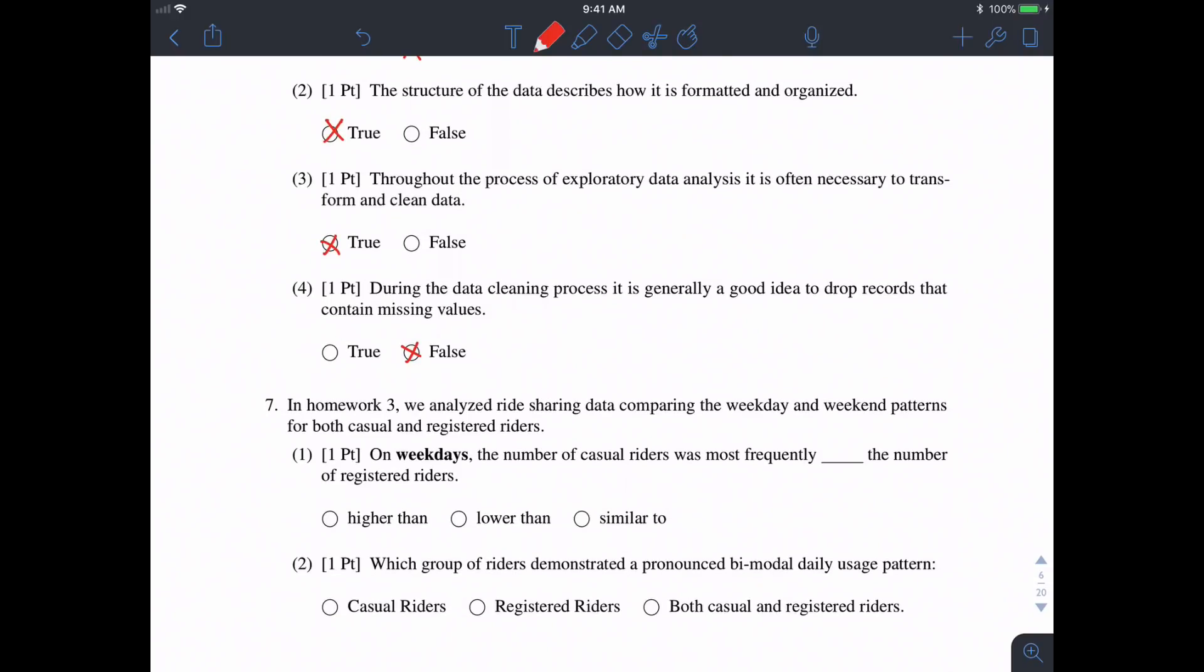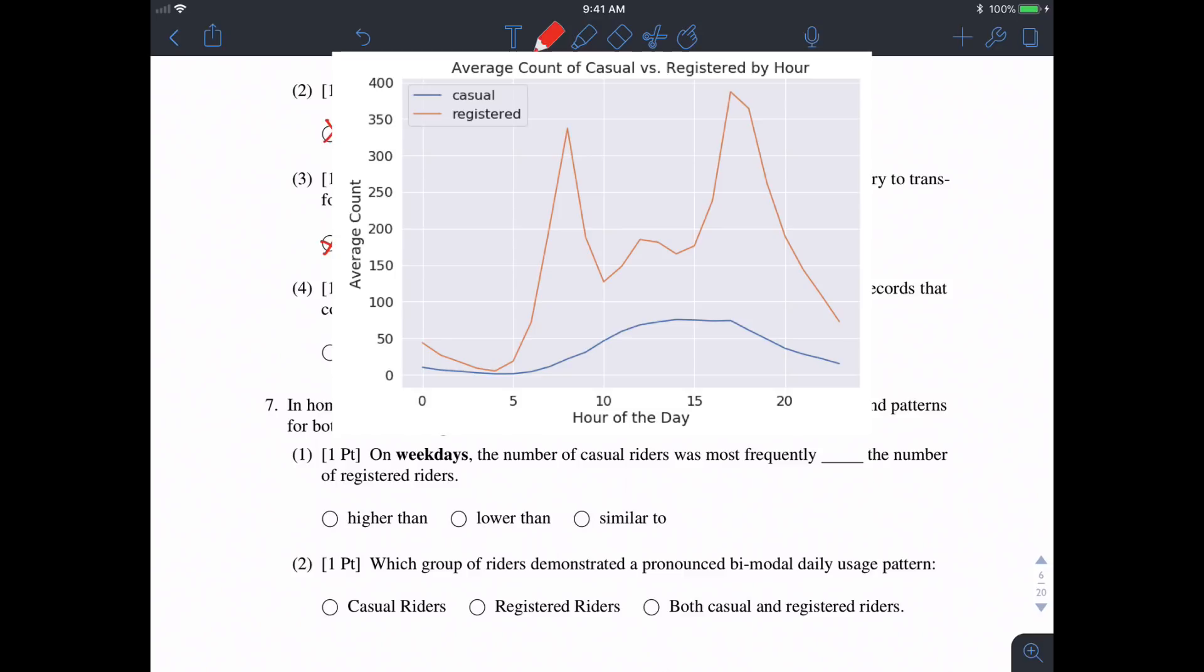Number seven references homework three and the plot of weekday and weekend patterns for both casual and registered riders. If you see the plot on screen right now, we notice that on weekdays the number of casual riders was frequently lower than the number of registered riders.